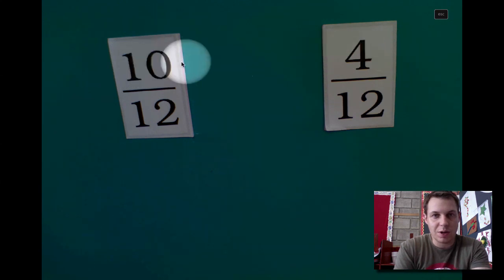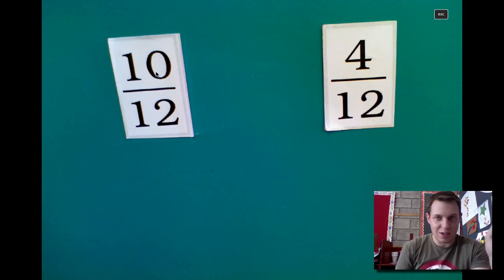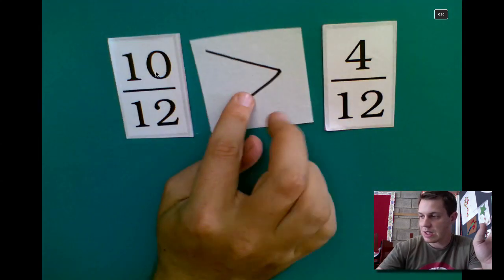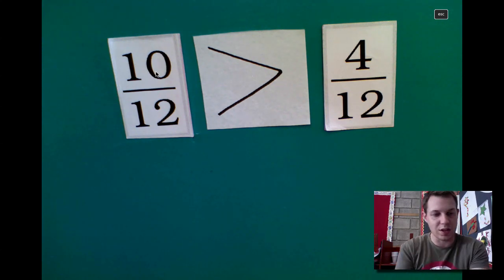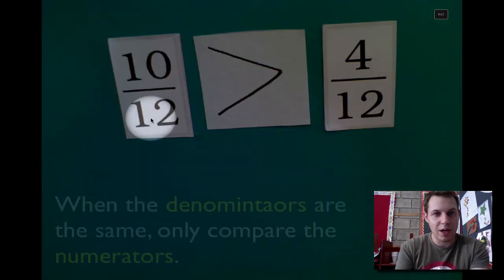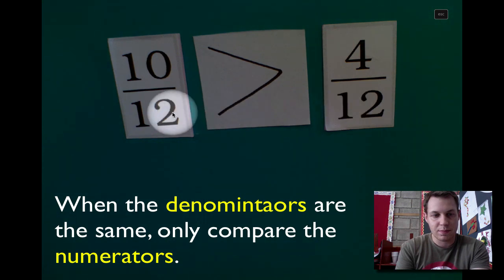And then you think, which is bigger, a 10 or a 4? Well, it's obviously a 10. So that's a pretty easy one to compare. We can say that 10/12 is greater than 4/12. When the denominators are the same, then all you need to compare are the numerators.